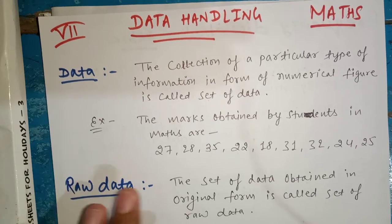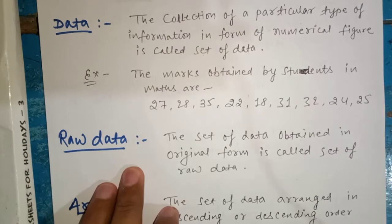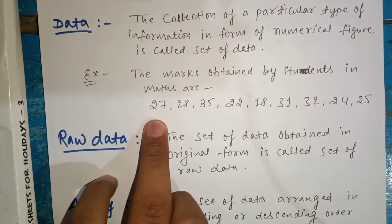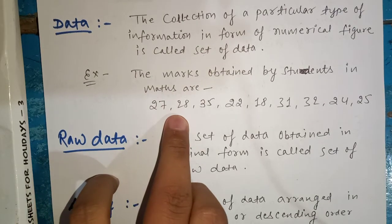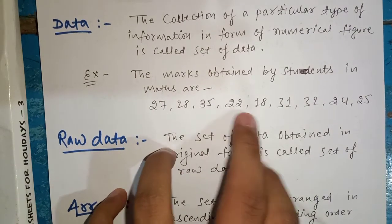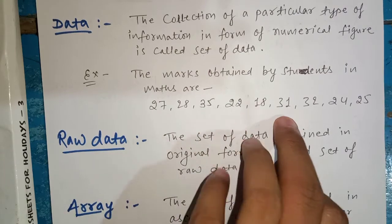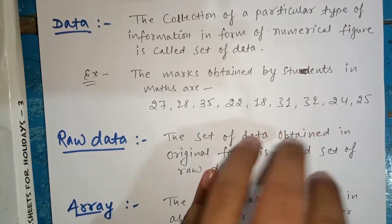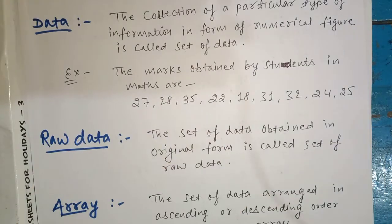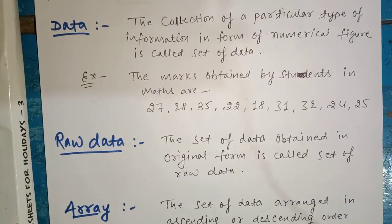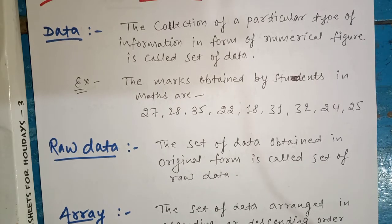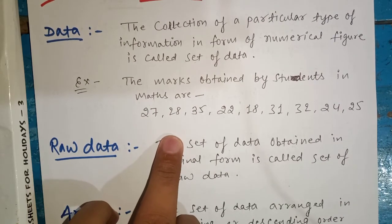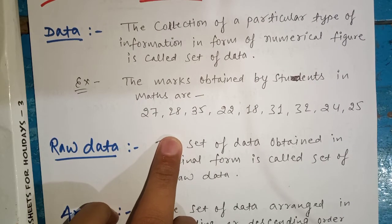For example, marks obtained by students in maths are 27, 28, 35, 22, 18, 31, 32, 24, and 25. So this data is telling us how many marks each child got in maths subject in a class.